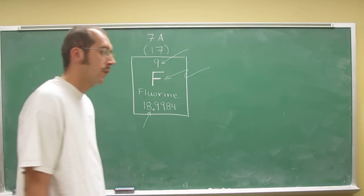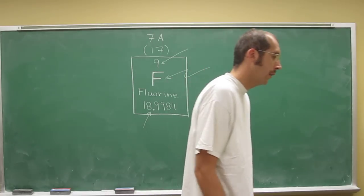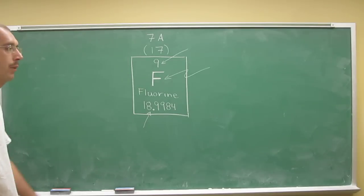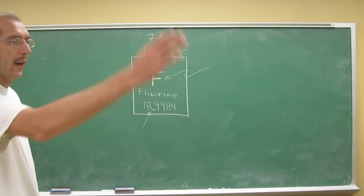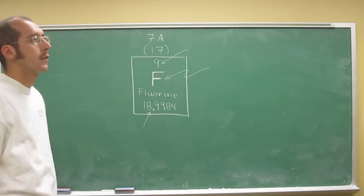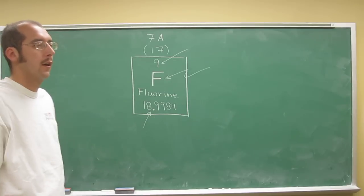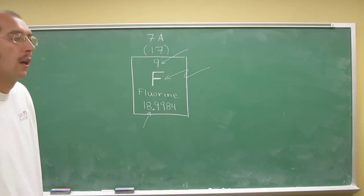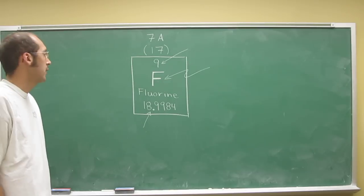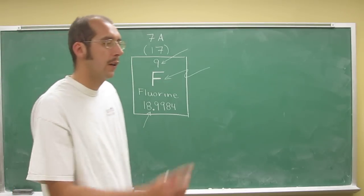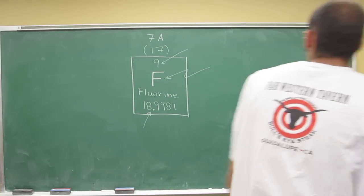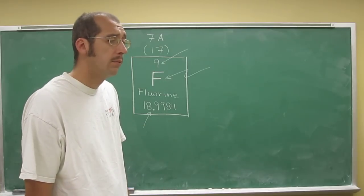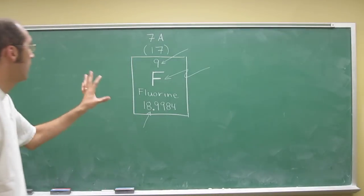Is fluorine a metal, metalloid, or nonmetal? You need the whole periodic table to figure that out. Remember, the staircase defines where the metalloids are. To the left of that staircase are the metals, and to the right are the nonmetals. Fluorine is on the right of that—it's one of the halogens—so it's a nonmetal.